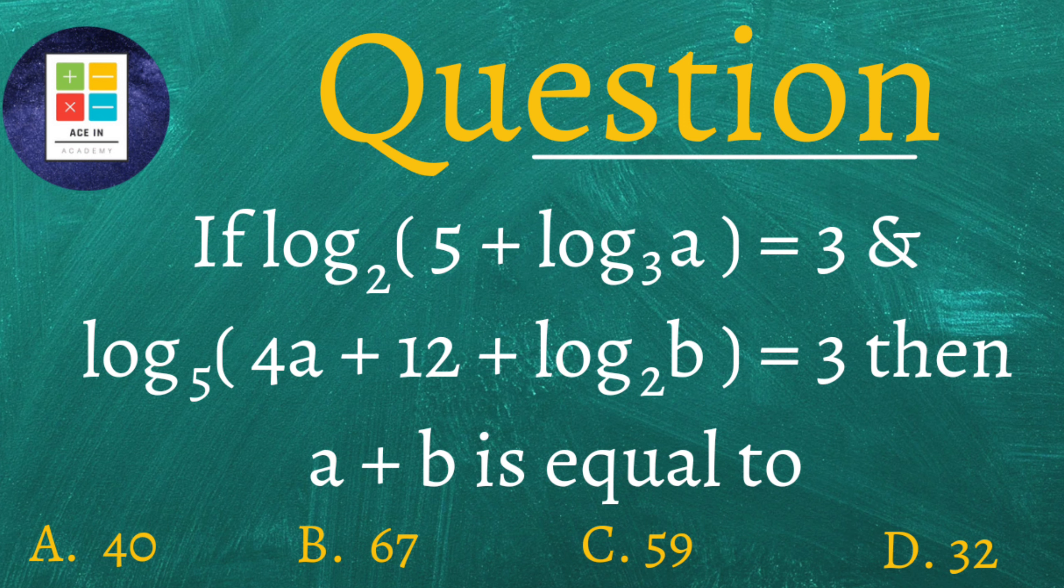Now the question is as follows: if log base 2 of (5 plus log base 3 of a) equals 3 and log base 5 of (4a plus 12 plus log base 2 of b) equals 3, then a plus b is equal to. We have four options: option A 40, option B 67, option C 59, and option D 32.